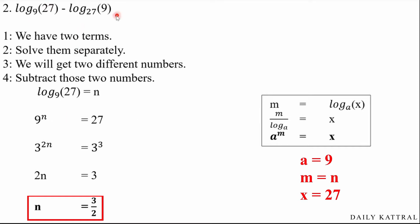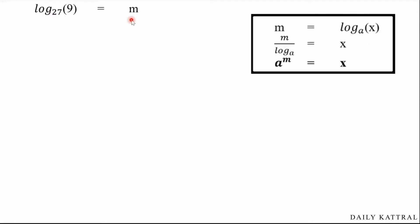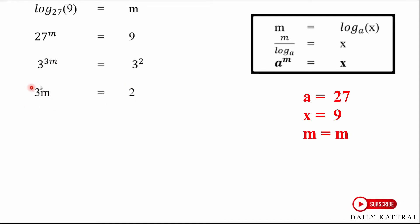For the second term, log base 27 of 9, let the value equal m. Using a to the power m equals x: 27 to the power m equals 9. Writing with base 3: 27 is 3 cubed and 9 is 3 squared, so 3 to the power 3m equals 3 squared. Therefore 3m equals 2, and m equals 2/3.